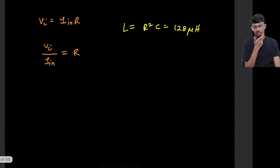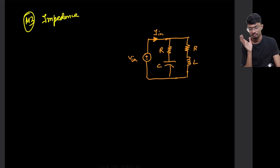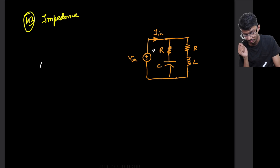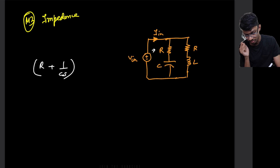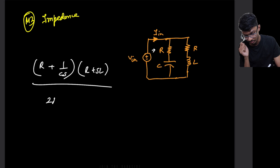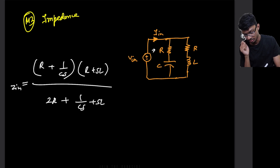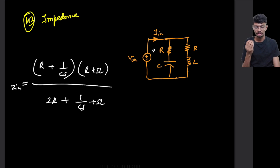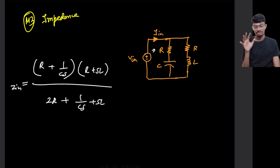Method 3 is the impedance method. The input impedance Z is given by: Z = [R + 1/(Cs)] × [R + sL] / [2R + 1/(Cs) + sL]. Substituting s = jω and equating the imaginary part to zero — since Vin and Iin in the same phase means the impedance must be purely real — we can solve for L and confirm the same result.